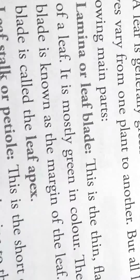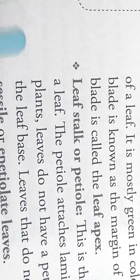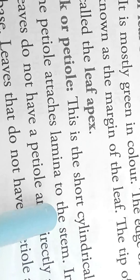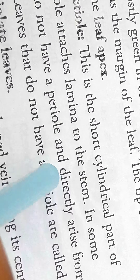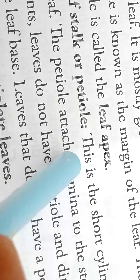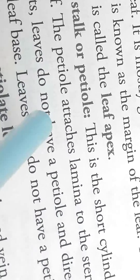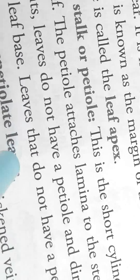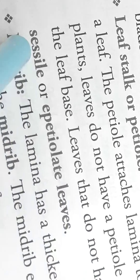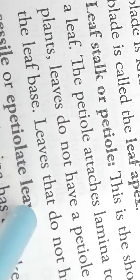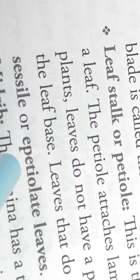Leaf stalk or petiole. This is the short cylindrical part of a leaf. The petiole attaches the lamina to the stem. In some plants, leaves do not have a petiole and directly arise from the leaf base. Leaves that do not have a petiole are called sessile or epipetiole leaves.